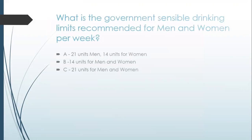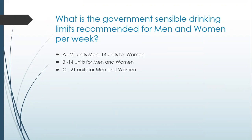What are the government's sensible drinking limits recommended for men and women per week as per NHS guidance? Is it A: 21 units for men and 14 units for women? Is it B: 14 units for both men and women? Or is it C: 21 units for both men and women? The correct answer is B. The NHS guidance used to state that the safe limit for men is 21 units and for women 14 units.